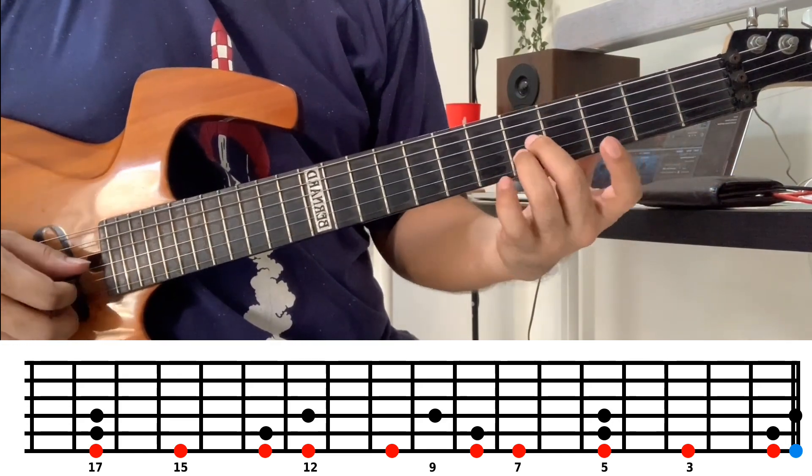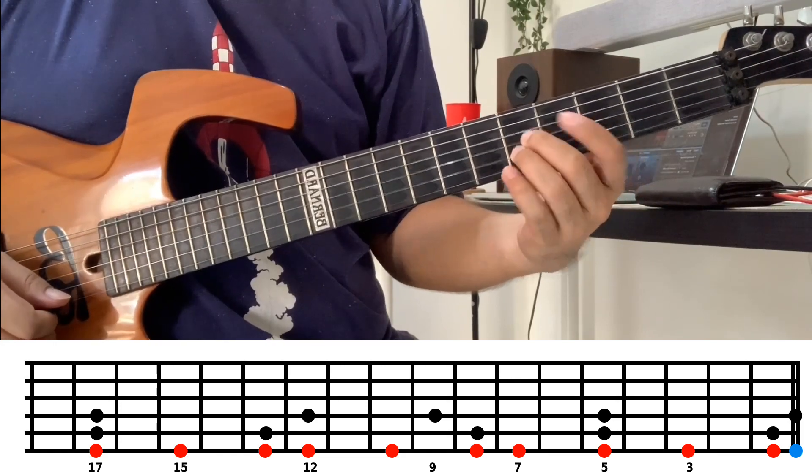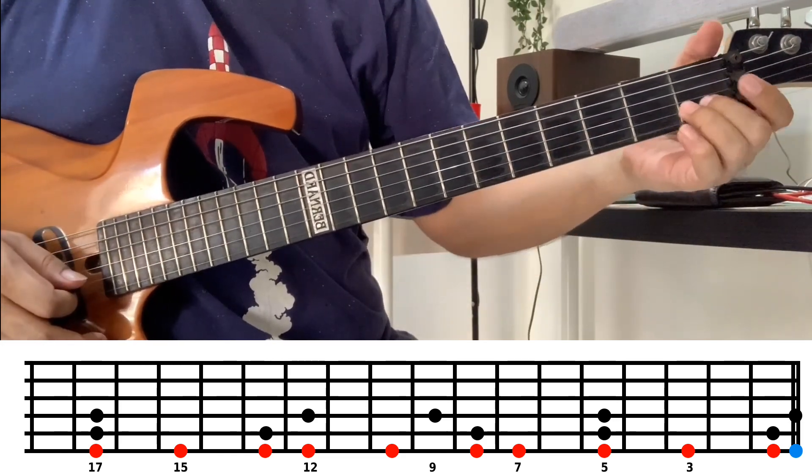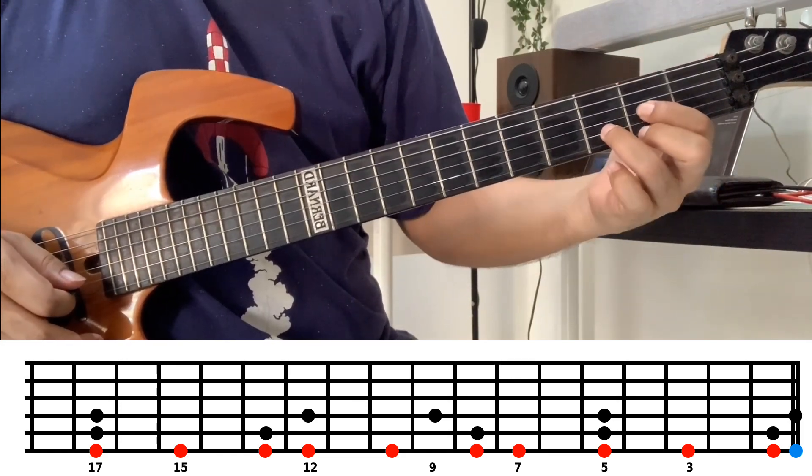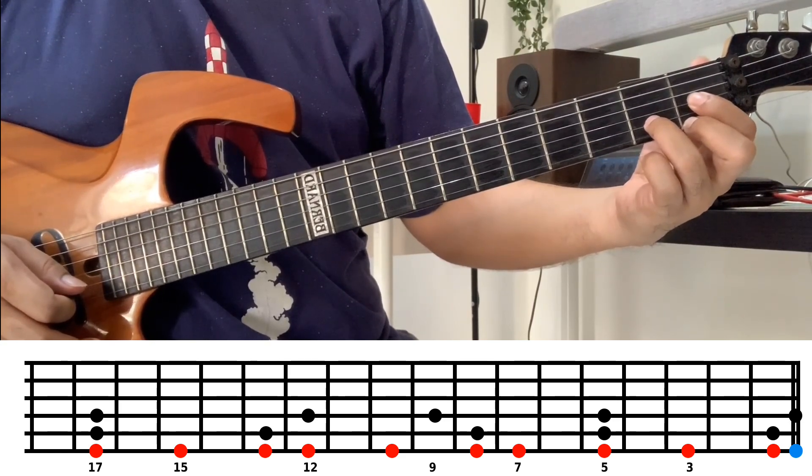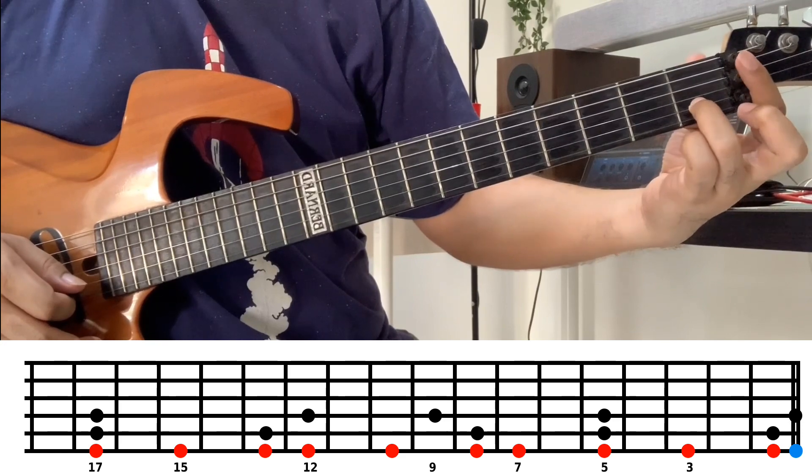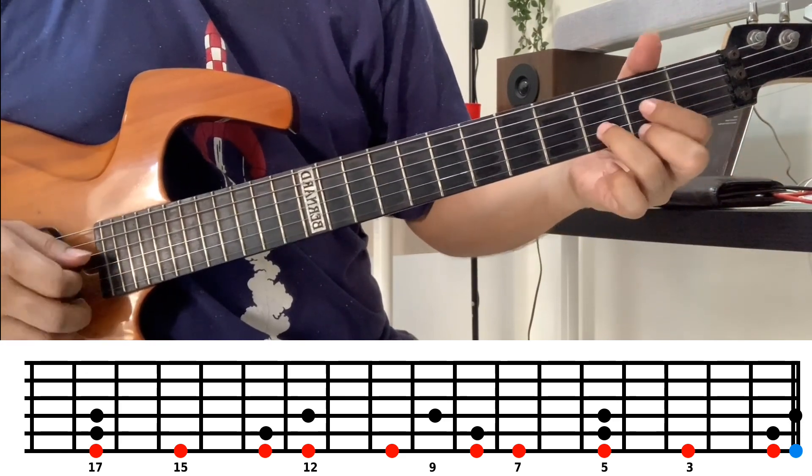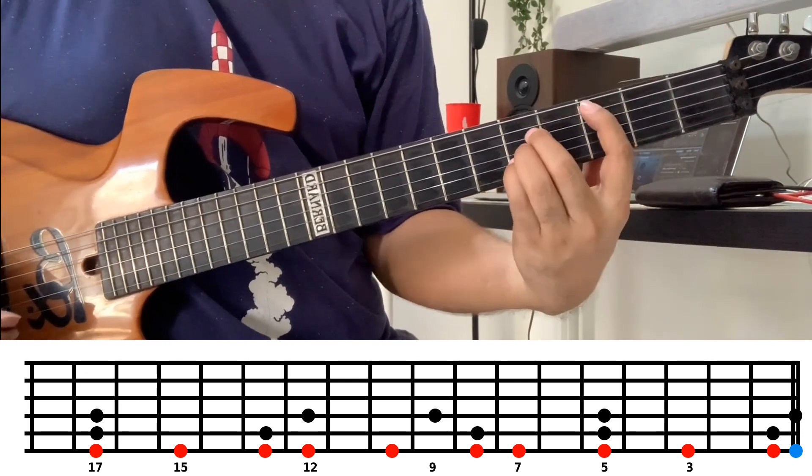The next one is at fret five. The shape is like this. If that was like a D shape, but because D moves back - D flat, D minor - then moves back again to become C. So the shape is a D shape.